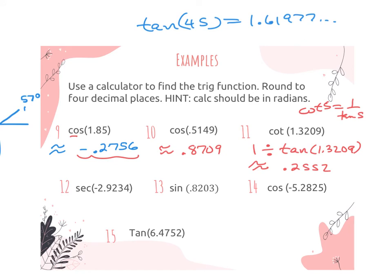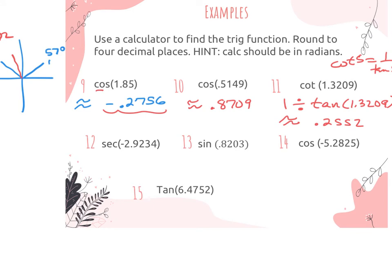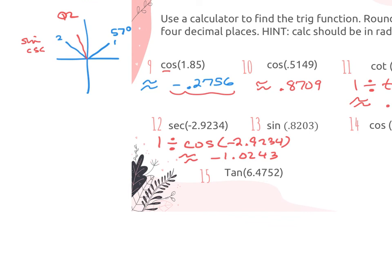When they give you the angle measure, you're putting in the number that's given. So when we get to number 12, we're not changing the sign — we enter it as a negative 2. It's when you find theta that we have to enter it as positive. For number 12, the reciprocal of secant is cosine. So I'm going to do 1 divided by cosine of negative 2.9234. Hit enter, and I get negative 1.0243. The reason this is negative isn't because I entered a negative angle — it's the location of the radian. Negative 2.9 radians ends up in quadrant 3, where only tangent and cotangent are positive, and I was doing secant.